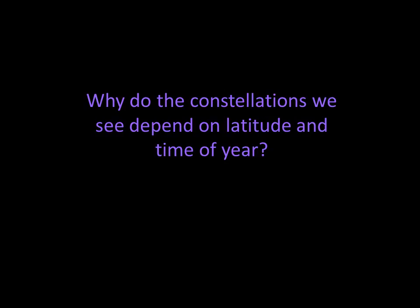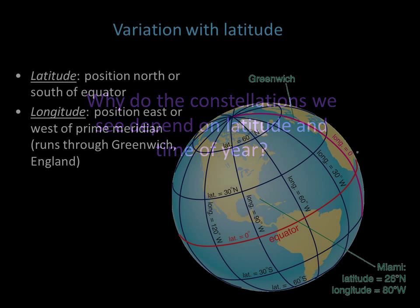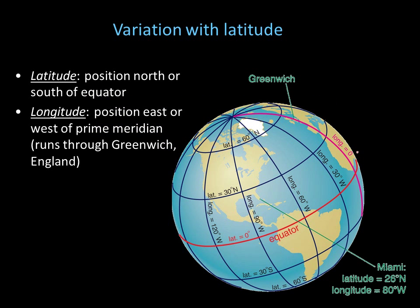If you've ever traveled and looked at the sky, you may have noticed it looks different from different locations. The sky also looks different depending on whether it's summer or winter. Why do the constellations we see depend on latitude and time of year? First, let's talk about variation with latitude.